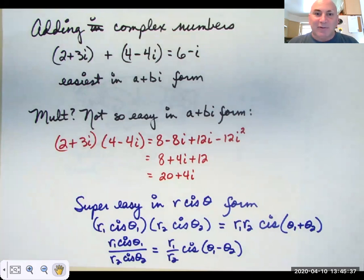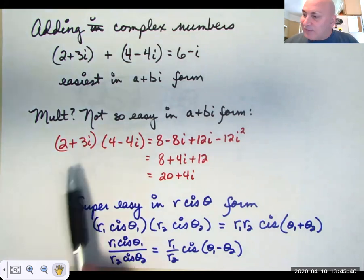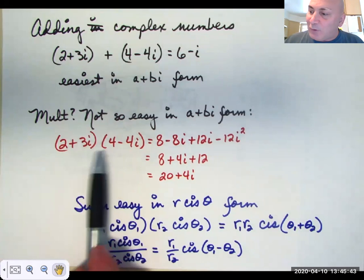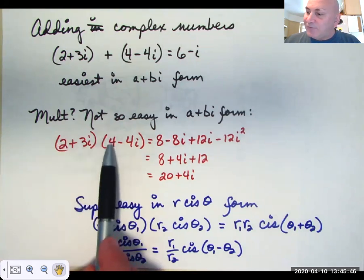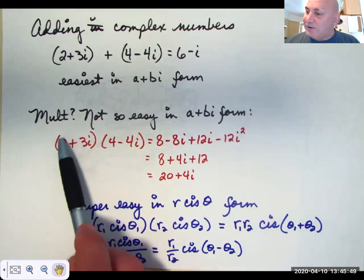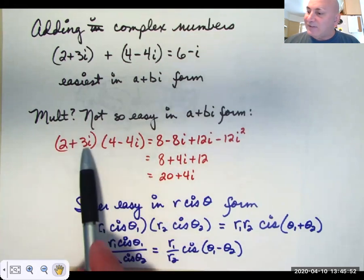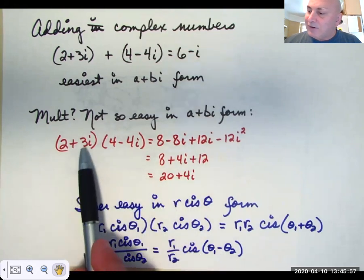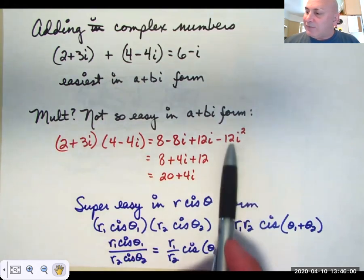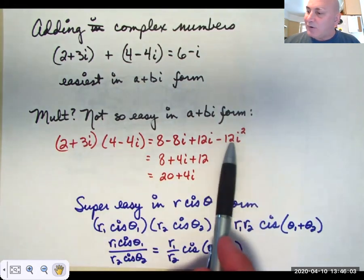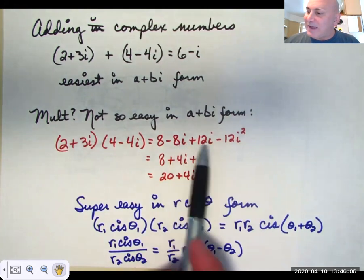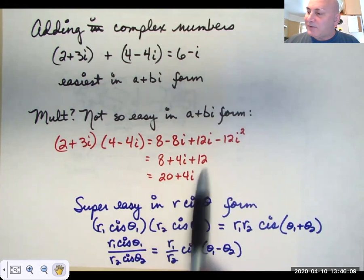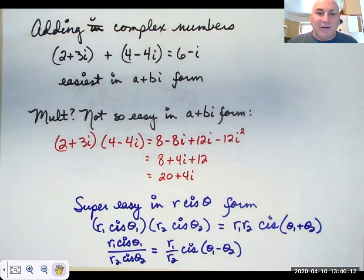Multiplying complex numbers? Not so easy. Because to multiply these two numbers, you have to do the FOIL method. F is first, two times four. O is outside, two times negative four I. I is inside, positive 12 I. L is last, negative 12 I squared. Well, negative I squared is positive one. So negative 12 I squared is plus 12. Combine the imaginary parts. Combine the real parts. And you get the answer, 20 plus 4 I. Not easy. Not difficult. But not easy.